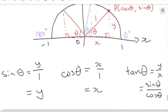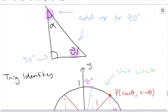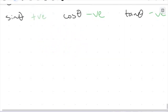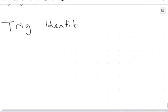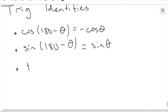We're looking now at a different way to define trigonometry — outside of just our regular right angle triangle. Here are the trig identities we'll examine. We have that cos of (180 minus theta) equals negative cos theta. Another one is that sin of (180 minus theta) is equal to sin theta. And we have that tan of (180 minus theta) equals negative tan theta.